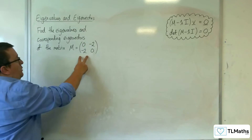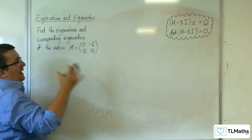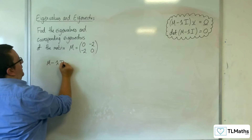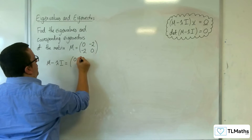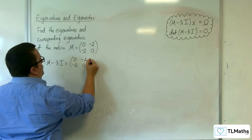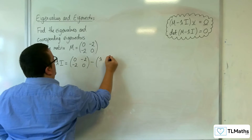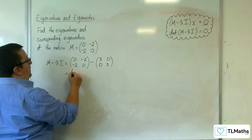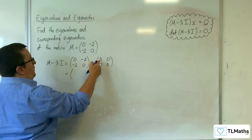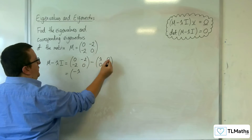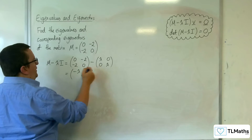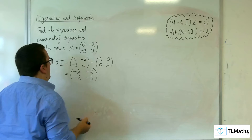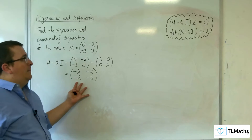Here's our matrix M. So M take away lambda times I is (0, -2, -2, 0) take away (λ, 0, 0, λ). And so this gives us (0 − λ, −2 − 0, −2 − 0, 0 − λ), which is (−λ, −2, −2, −λ). That is M take away lambda I.